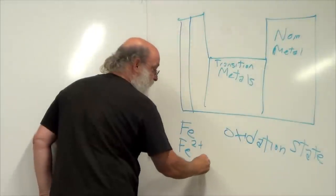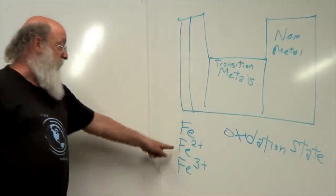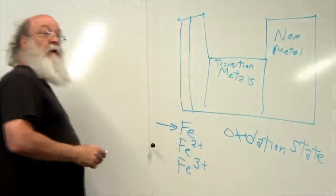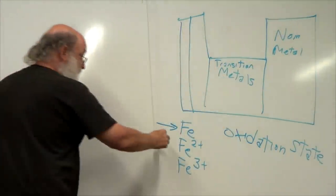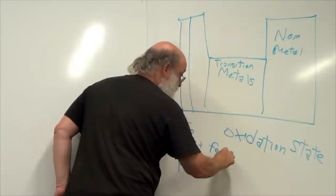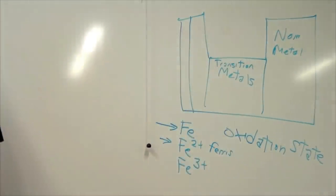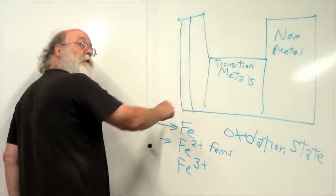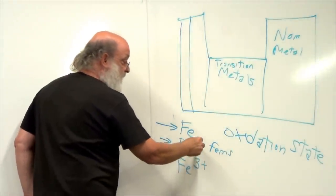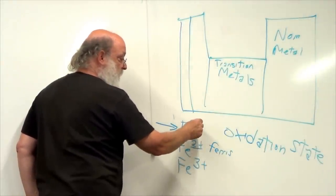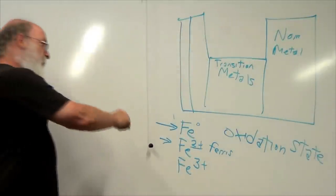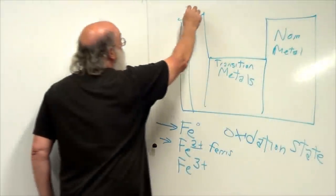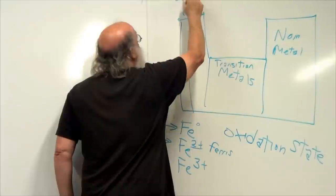Iron examples are given: metallic iron with no charge, ferrous iron Fe2+, and ferric iron Fe3+. Each acts differently in biological systems. When the oxidation number goes down it's reduction, when it goes up it's oxidation. The alkaline metals area is also noted.